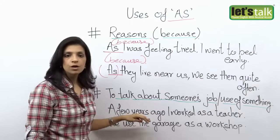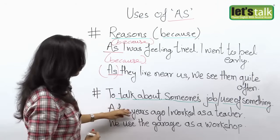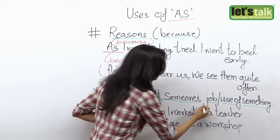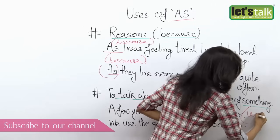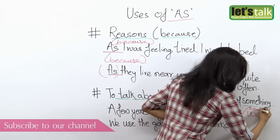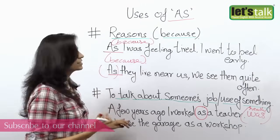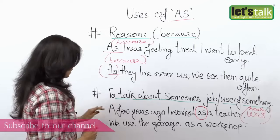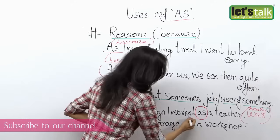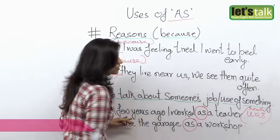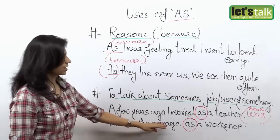We also use 'as' when you talk about someone's job or when you want to say how something is used. For example: 'A few years ago, I worked as a teacher' — meaning I was a teacher a few years ago. Or your friend works as a manager in a company. Another example: 'We use the garage as a workshop' — here you are saying how you make use of something.